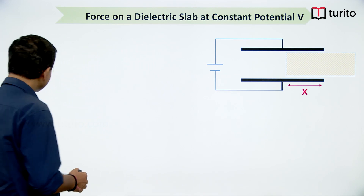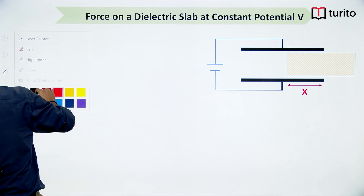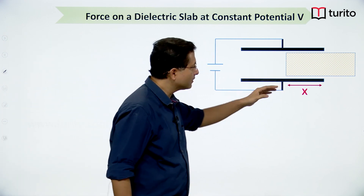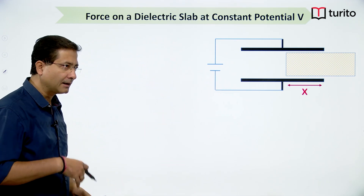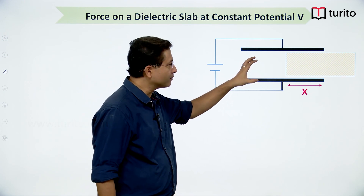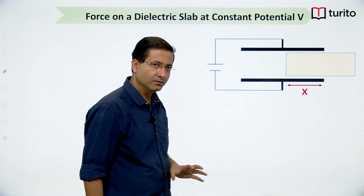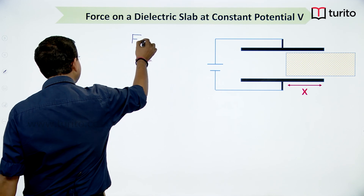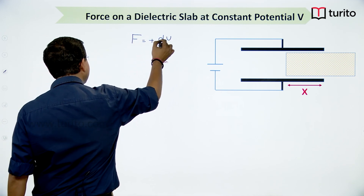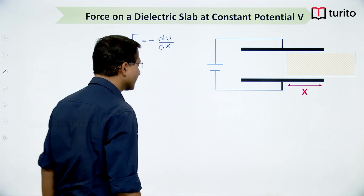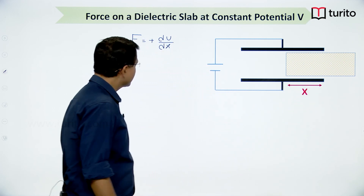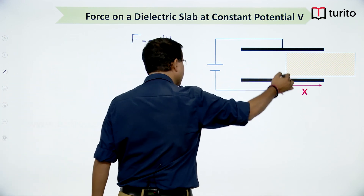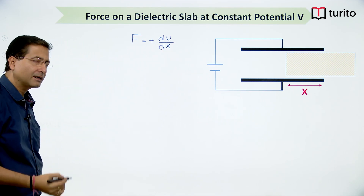There are two situations: one where we place the dielectric inside the capacitor and the cell remains connected, and another where we place the dielectric inside the capacitor and the battery is removed. When the battery remains connected, the force the dielectric experiences is given by plus dU/dx, where x is the part of the dielectric inside.